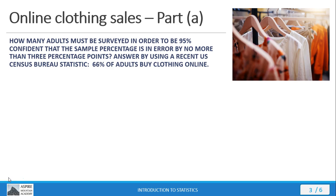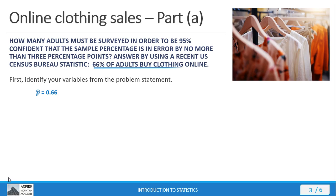Okay, let's check out how to work this. First we're going to identify the variables we have from the problem statement. Our probability of success from that Census Bureau statistic: 66% of adults are buying clothing online. That means our probability of failure is going to be 34% — just subtract that 66% from 1.